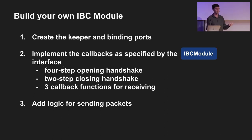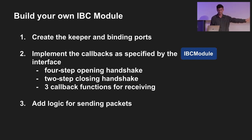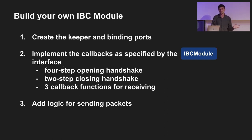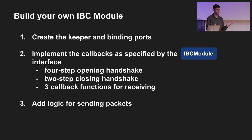Then you have a two-step closing handshake - when a channel closes, no more messages can be sent across from blockchain A to blockchain B. Then this last part is adding whatever logic is relevant - and this is going to be completely up to you and how you want to design it. I want to give a few examples of current IBC modules that have been implemented and what cool things they can unlock.